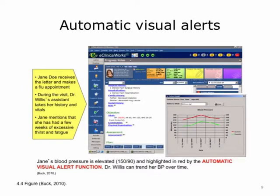Jane Doe receives the letter and makes the follow-up appointment. During the visit, Dr. Willis' assistant takes her history and vitals. Jane mentions that she has had a few weeks of excessive thirst and fatigue, which is documented in her clinical note. Unfortunately, her blood pressure is elevated at 150 over 90 and shows up in red. The EHR is alerting the provider with a color change that this patient may need additional follow-up care, and it also provides features of trending over time, showing that her blood pressure is just not in a good range.